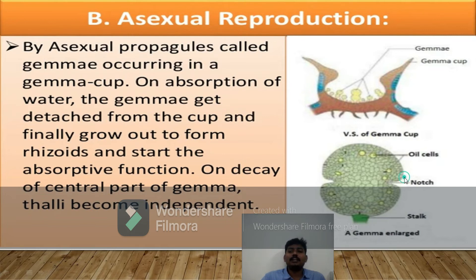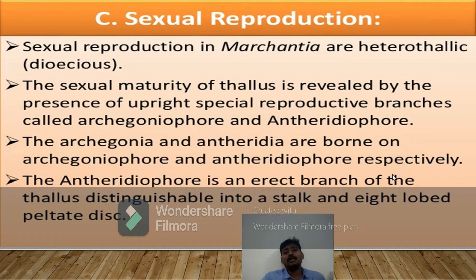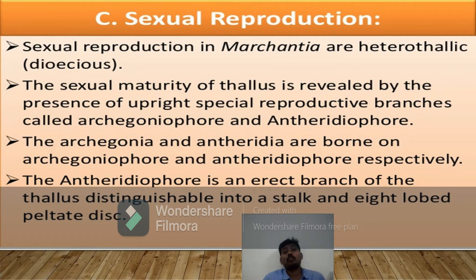The third reproduction is sexual reproduction. In Marchantia, sexual reproduction is heterothallic, meaning the male thallus is different from the female thallus — Marchantia thallus is dioecious. The sexual maturity of the thallus is revealed by the presence of upright special reproductive branches called archegoniophores and antheridiophores. The sex organs of Marchantia are the anthridium — the male sex organ — and the archegonium — the female sex organ.